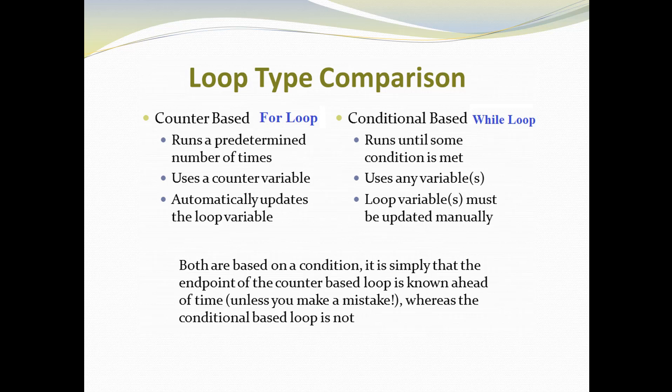With a while loop, you use any variable but you have to manually update it inside the loop. Each time the loop runs, it checks the condition to see if it is still met. The key difference is that in a counter-based for loop, the counter variable is pre-determined and updates automatically, whereas in a while loop you must update the variable manually. The endpoint of a counter-based loop is known ahead of time, whereas in a conditional-based loop it is not.